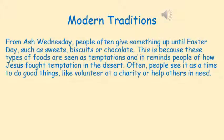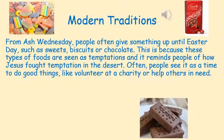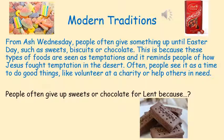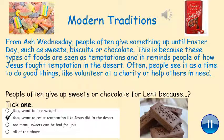Modern traditions — traditions that happen now. From Ash Wednesday people often give something up until Easter Day, such as sweets, biscuits or chocolate. This is because these types of food are seen as temptations, and it reminds people of how Jesus fought temptation in the desert. People often also see it as a time to do good things like volunteer at a charity or help others in need. People often give up sweets or chocolate for Lent because they want to resist temptation like Jesus did in the desert.